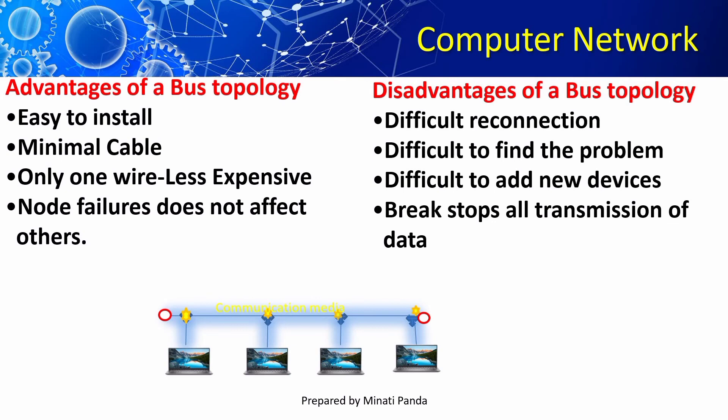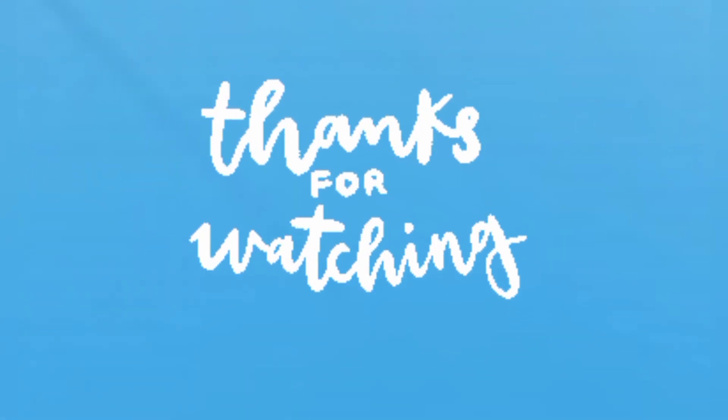Difficult to add new devices because the main cable length is restricted. There is no redundancy. If the main cable breaks, that portion will be inactivated — that is why this network is not a fault tolerant network. Hope this video is beneficial to you. Thanks for watching.